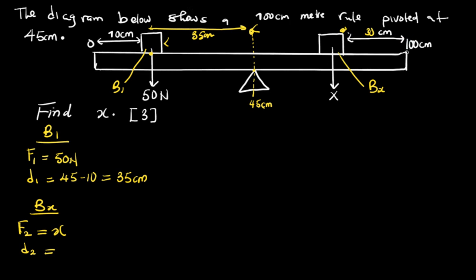If the distance between the box and the last part of the meter is 30, what is 100 minus 30? 70 centimeters. That's where the box has been put. If the box has been put at 70 centimeters, I'm going to say 70 minus 45 gives me 25 centimeters.